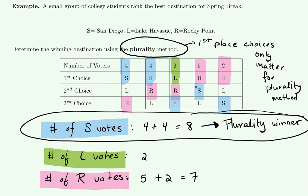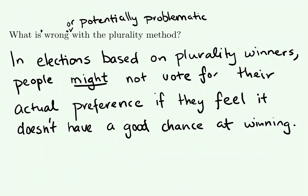The plurality method doesn't account for ranked preferences. One critique of the plurality method is that if voters know only the first choice matters, some voters might not vote for their actual preference if they feel their preference doesn't have a good chance of winning. People might say 'I don't want to throw away my vote,' and instead of voting for their actual preference, they choose something less appealing to them but that they feel has a greater chance of winning.